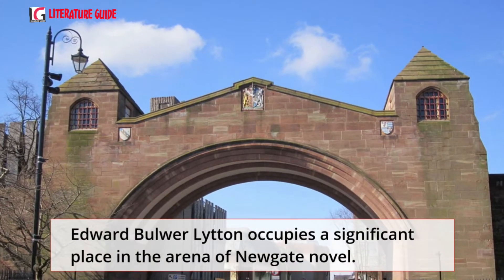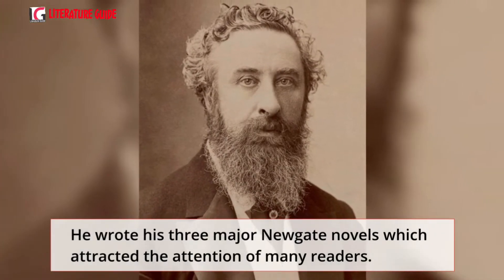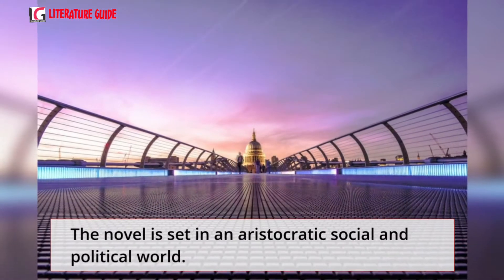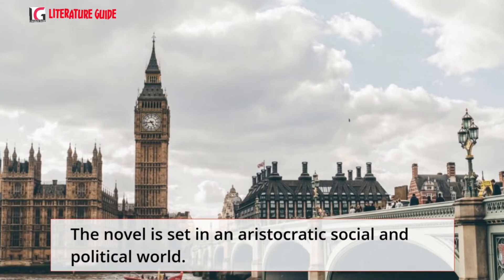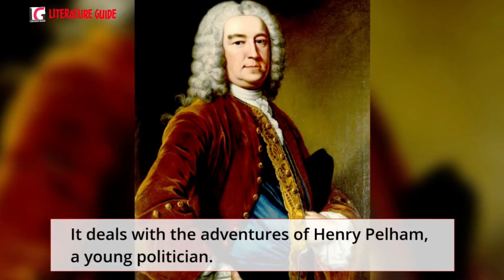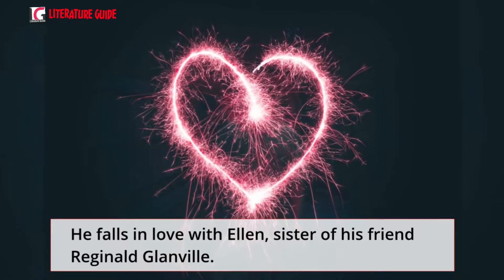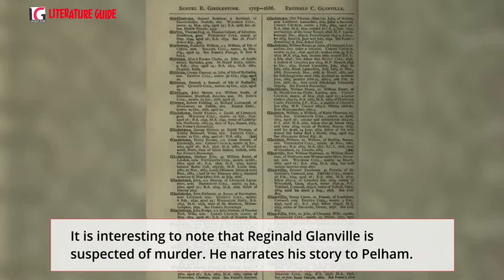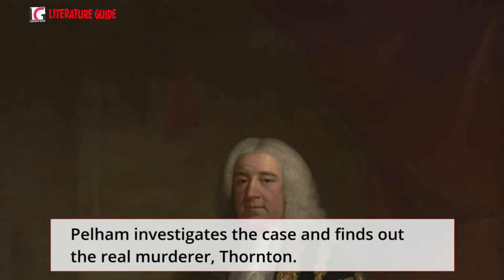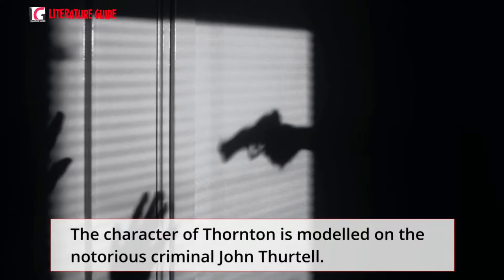Edward Bulwer-Lytton occupies a significant place in the Newgate novel. His Newgate novel Pelham, or The Adventures of a Gentleman, appeared in 1828. Set in an aristocratic social and political world, it is influenced by Benjamin Disraeli's novel Vivian Gray. It deals with the adventures of Henry Pelham, a young politician who falls in love with Ellen, sister of his friend Reginald Glanville. Glanville is suspected of murder and narrates his story to Pelham, who investigates and finds the real murderer, Thornton — a character modelled on the notorious criminal John Thurtle.